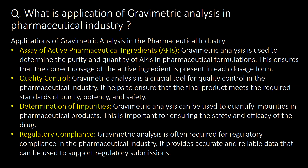Next question: what is the application of gravimetric analysis in the pharmaceutical industry? Application of gravimetric analysis in the pharmaceutical industry includes assay of active pharmaceutical ingredients (APIs) in quality control, determination of impurities, and regulatory compliance.